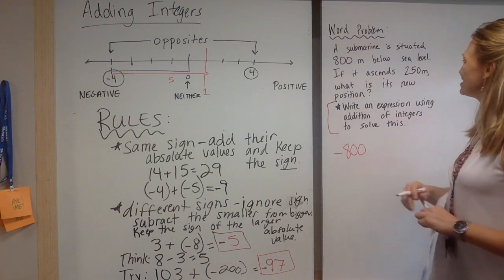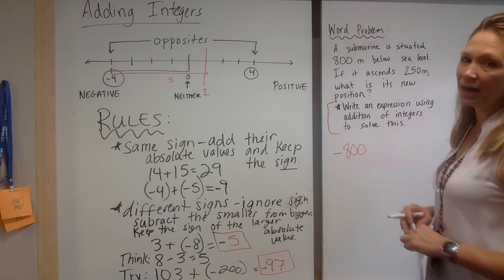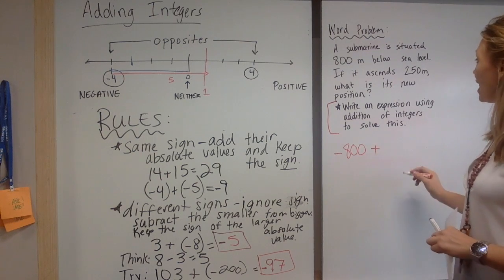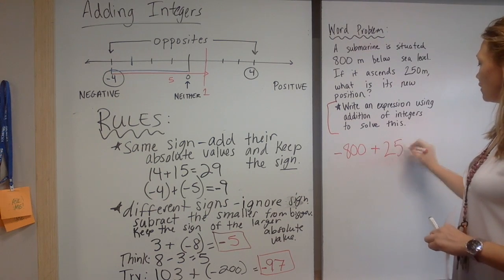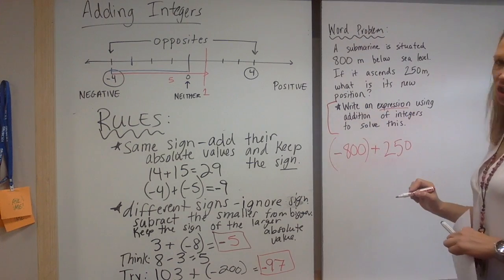And it ascends 250 meters, so it goes up. So would that be a positive or negative quantity? I would say positive. So really we're adding a positive 250. This is what they mean when they say write an expression using addition.